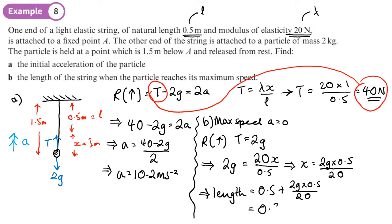So 0.99 metres. So it's still longer than its natural length when it's reached its maximum speed, when there's no more acceleration.